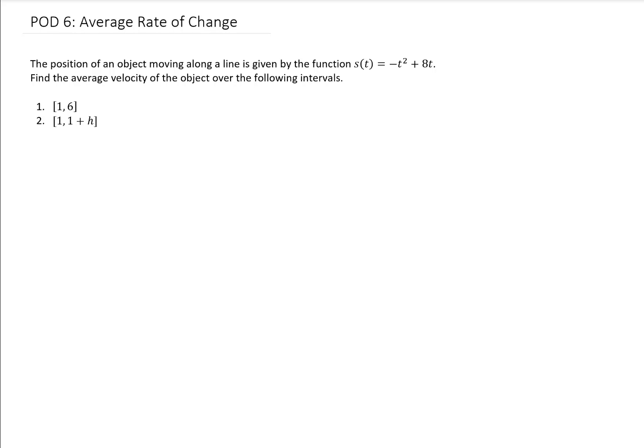For problem of the day 6, we were given a position function and we're asked to find the average velocity of that object. The first note here is that the average velocity of an object given its position function is the average rate of change of the position function.